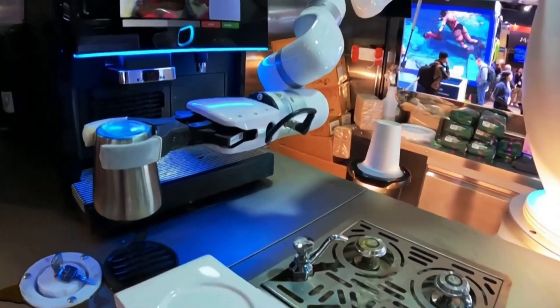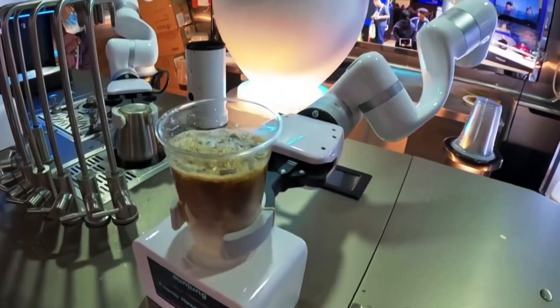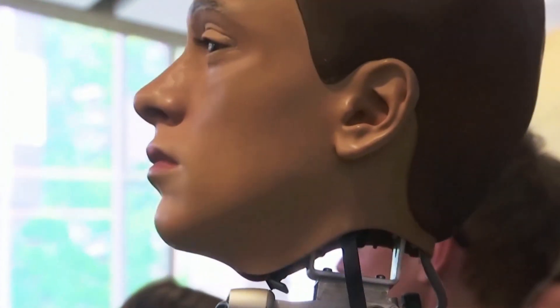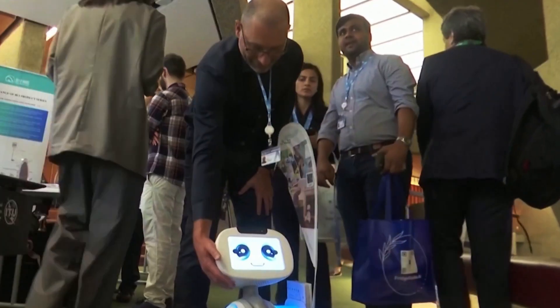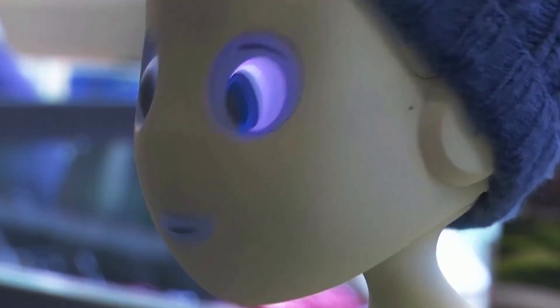Researchers are exploring the possibility of creating a vascular system for robotic skin similar to the network of blood vessels in our bodies. This would allow the skin to stay hydrated, heal itself, and even grow just like human skin.